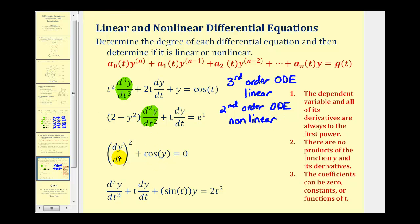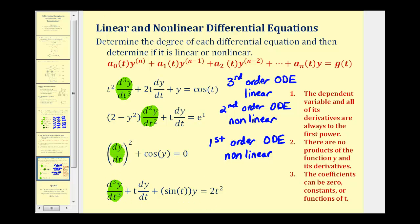Looking at equation four, we have a first derivative raised to the second power. Because it is a first derivative, this is a first order ODE. However, the derivative is raised to the second power rather than the first, violating condition one — therefore this is nonlinear. For the last example, the highest derivative makes this a third order ODE. The dependent variable and all its derivatives are to the first power, there are no products of Y and its derivatives, and the coefficients are zero, constants, or functions of T — therefore this is a linear third order ODE.